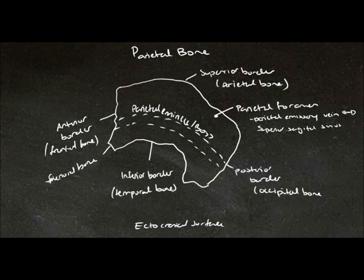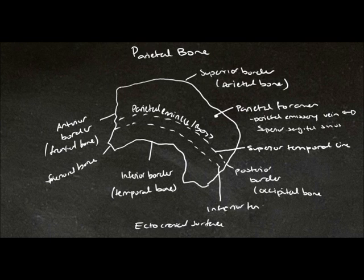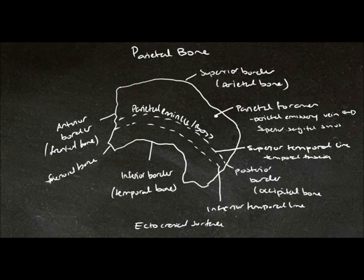Here is where we find the temporal lines: the superior temporal line and the inferior temporal line. The superior temporal line is for the attachment of the temporal fascia. The inferior temporal line is for the muscular origin of the temporalis muscle.